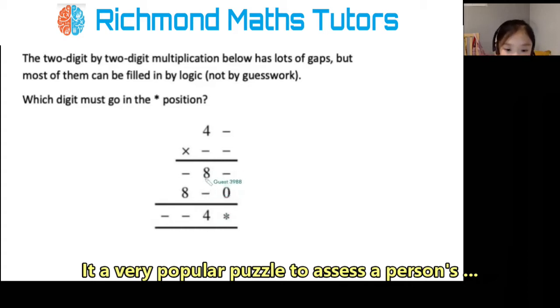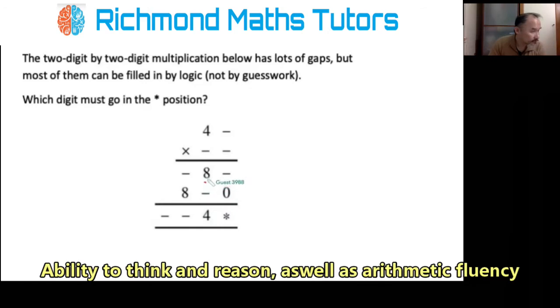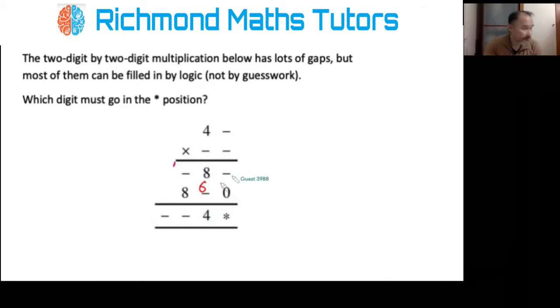So, eight plus one equals four. Eight plus six gives you fourteen, which means there would be a carryover of one here.